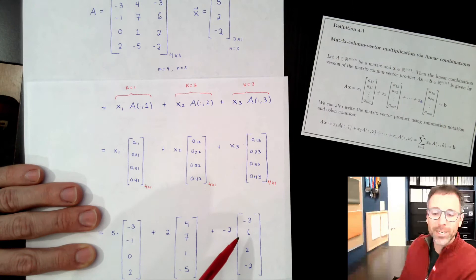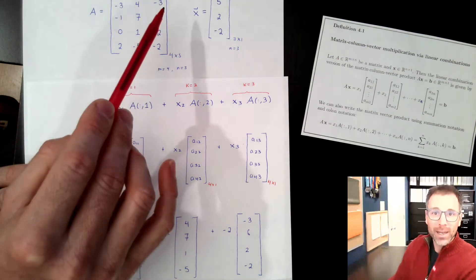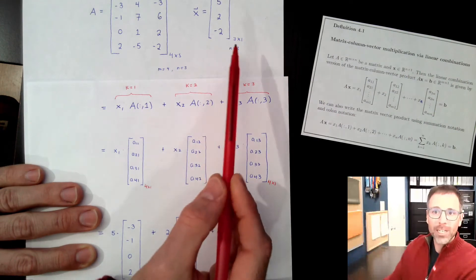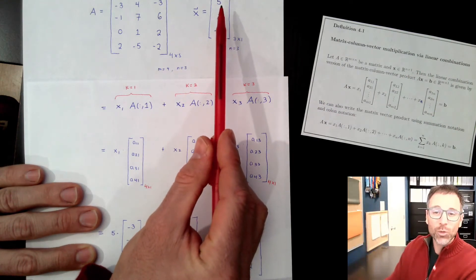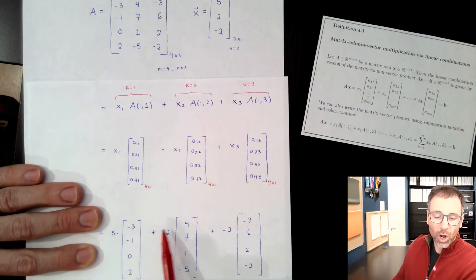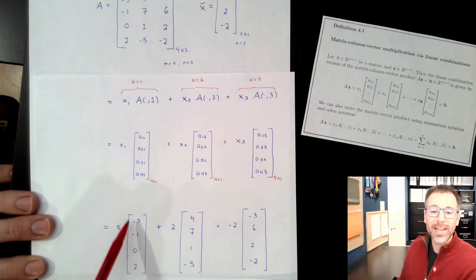And then over here is negative 3, 6, 2, negative 2, negative 3, 6, 2, negative 2. Each individual column is paired with the entries of x. So x1 gets paired with column 1, x2 gets paired with column 2, x3 gets paired with column 3.